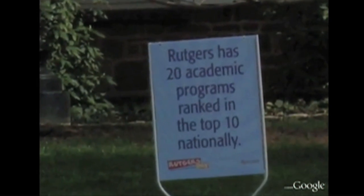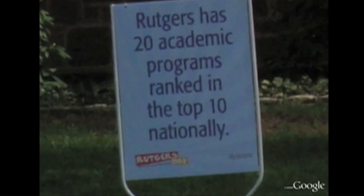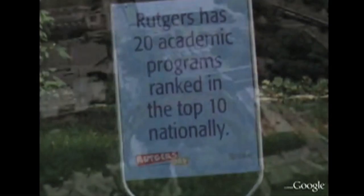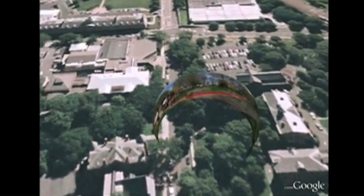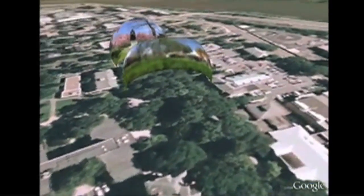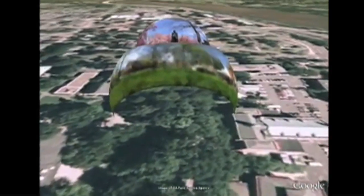Rutgers having three separate campuses, with Where Are You it all comes together. So somebody in New Brunswick can see what Newark is like, somebody in Newark can see what's going on in Camden. You can use it both for educational purposes and to show what we are doing.